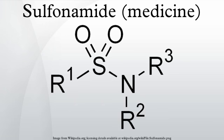Sulfonamide is the basis of several groups of drugs. The original antibacterial sulfonamides are synthetic antimicrobial agents that contain the sulfonamide group. Some sulfonamides are also devoid of antibacterial activity, for example, the anticonvulsant sultiame. The sulfonylureas and thiazide diuretics are newer drug groups based on the antibacterial sulfonamides. Allergies to sulfonamide are common, hence medications containing sulfonamides are prescribed carefully.